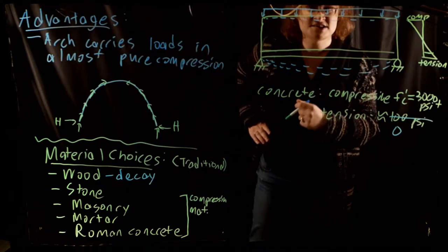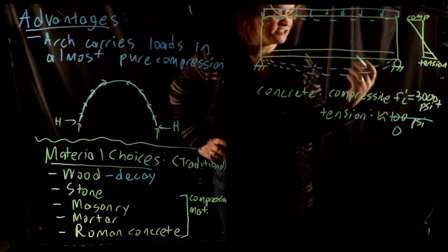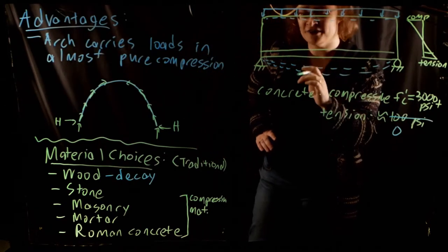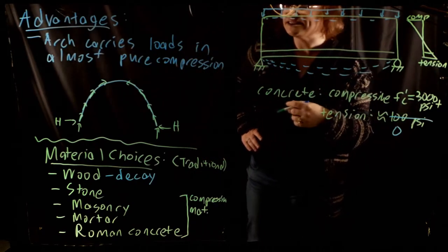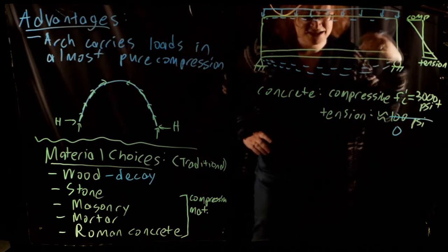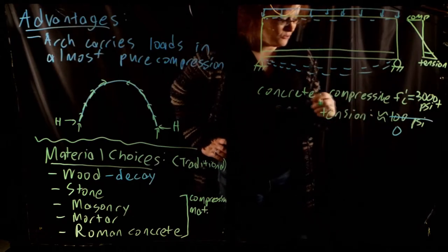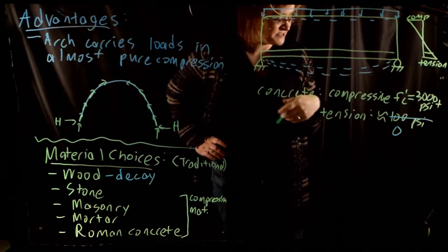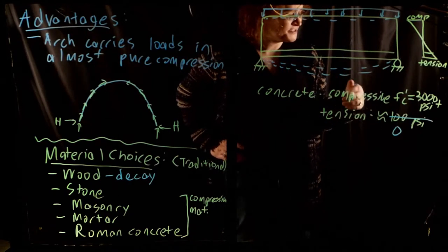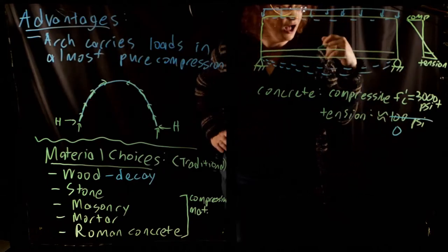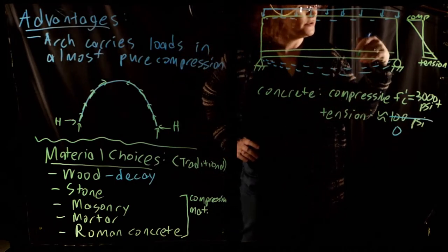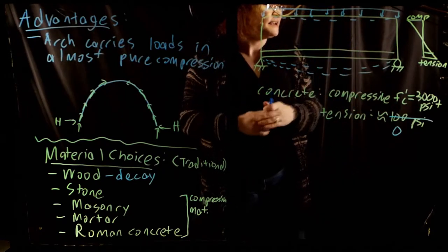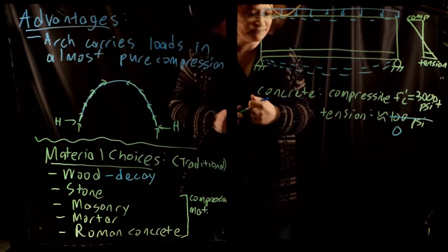We can only do this because of technology invented in the 19th century — namely, figuring out how to make steel in very large quantities. Steel weapons existed all the way back to Roman times, but had to be made in very small batch processes by a blacksmith — very labor-intensive and expensive. It wasn't until the 19th century that we developed techniques to make steel in mass quantities cheap enough to be used as a building material.